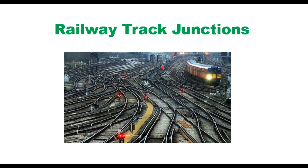Hello friends, today we will discuss railway track junctions. Track junctions are formed by the combination of points and crossings. Their main objective is to transfer a railway vehicle from one track to another, or to enable them to cross one track to another.